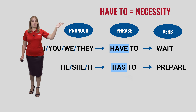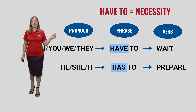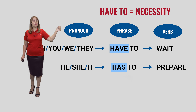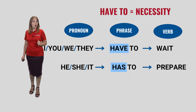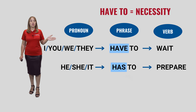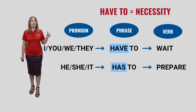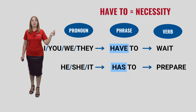Depending on the pronoun, we might change the phrase from HAVE TO to HAS TO. For the pronouns I, you, we, and they, we use the phrase HAVE TO. For example: I HAVE TO WAIT.